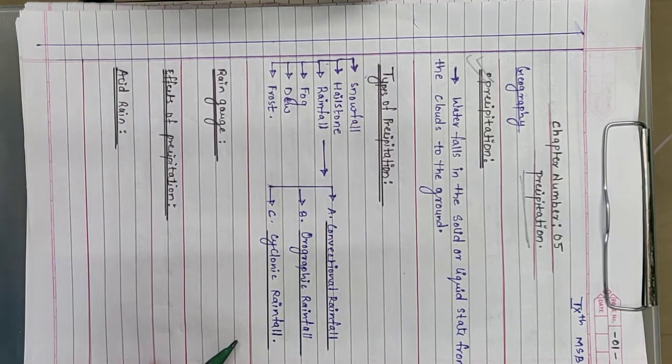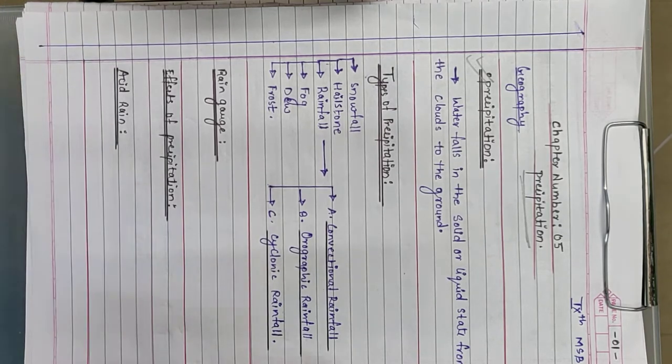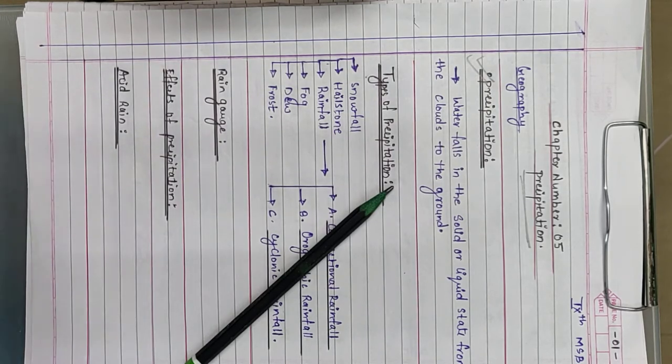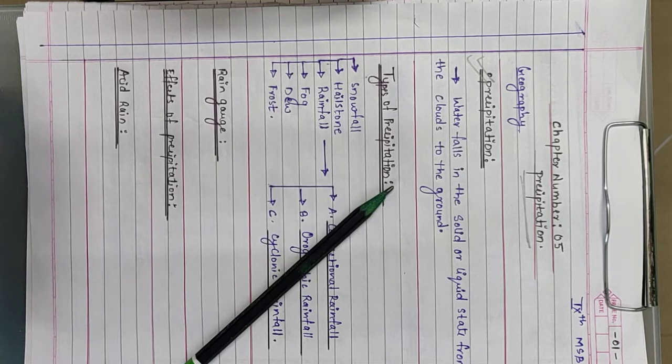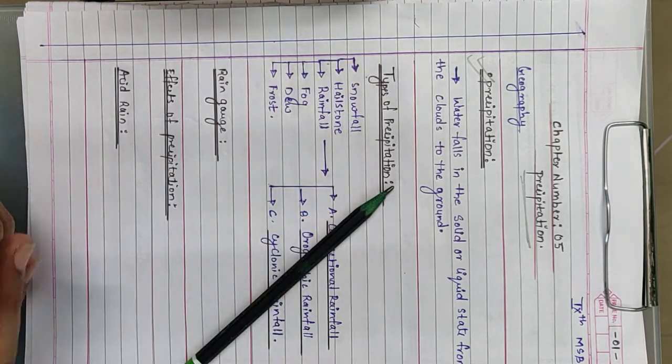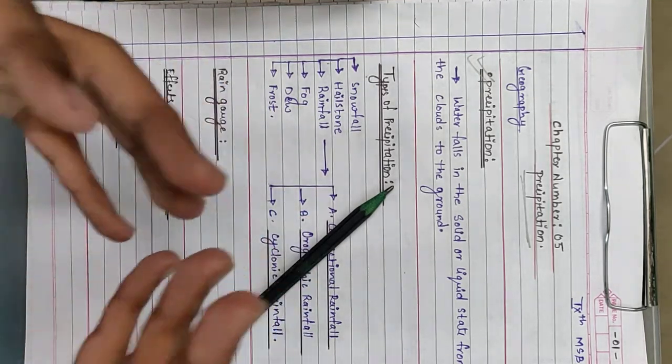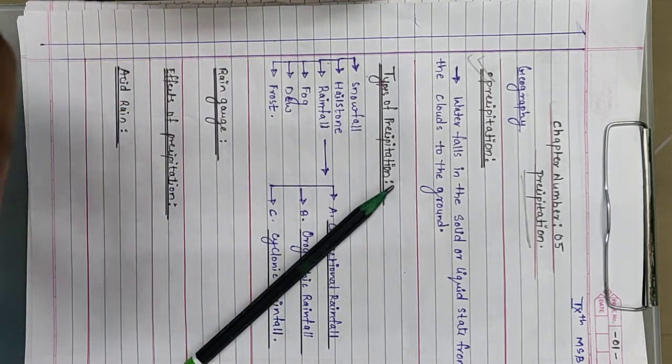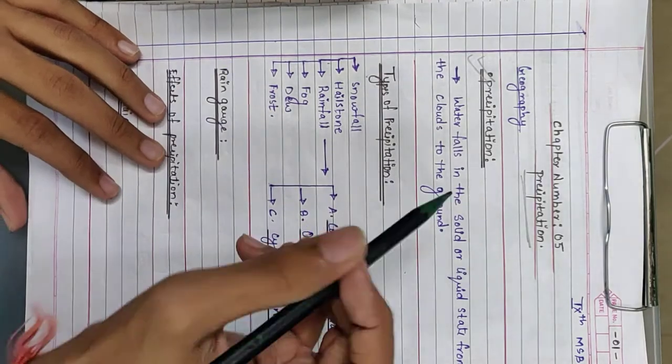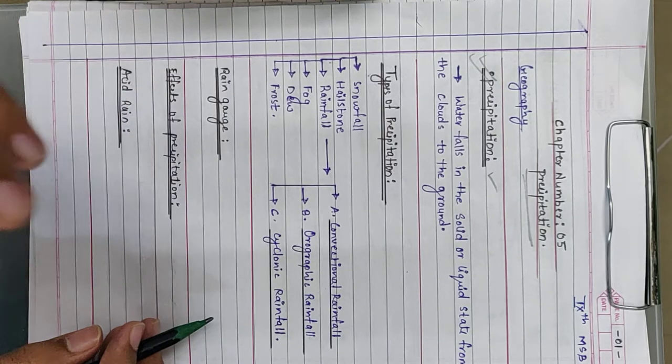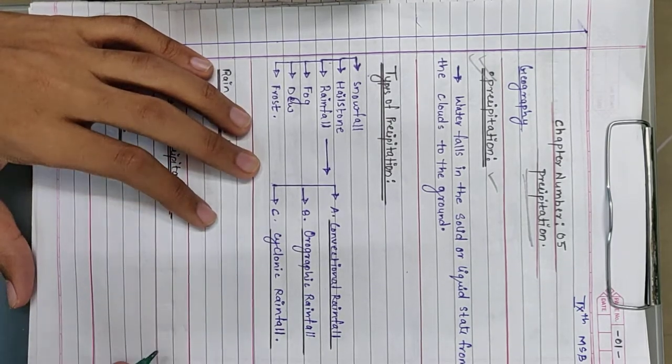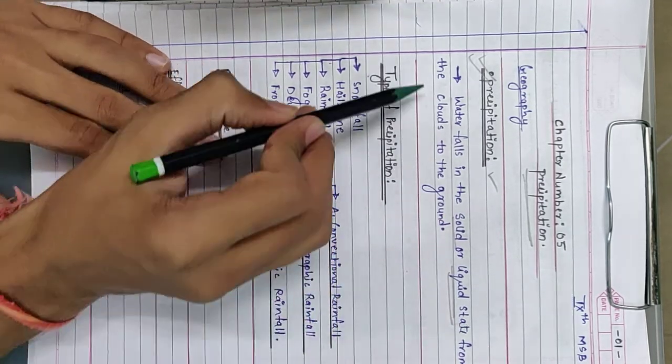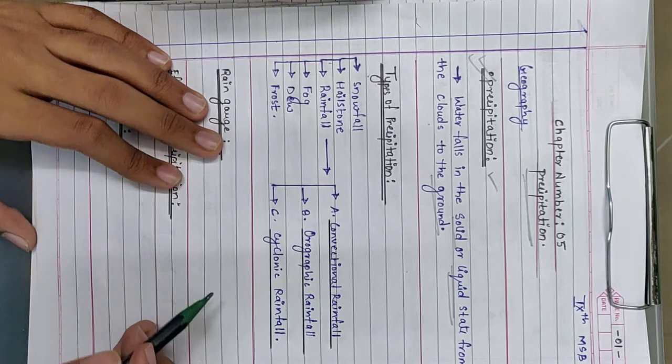Precipitation means when water droplets, snowfall, or hailstone from our higher atmosphere falls to lower atmosphere. If any object comes from higher atmosphere towards earth's surface in solid or liquid state, that is precipitation. The definition is: water falls in the solid or liquid states from the clouds to the ground is known as precipitation.